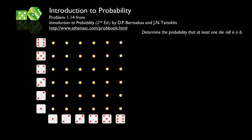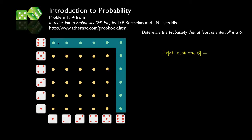Now let's determine the probability that at least one die roll is a six. The outcomes where at least one die is six include everything along the sixth row and sixth column of the grid. Counting those up gives eleven outcomes out of 36, so the probability is eleven divided by thirty-six.